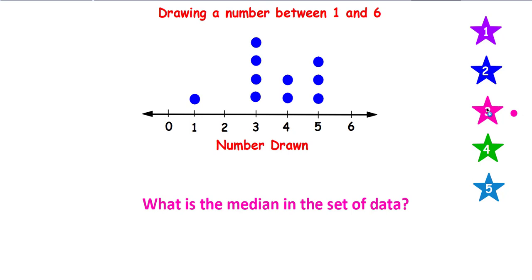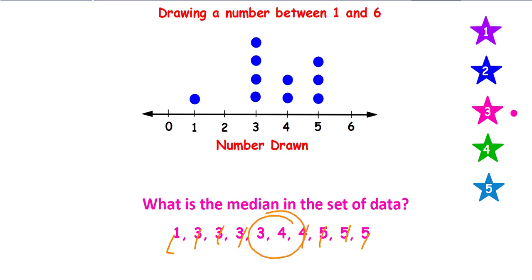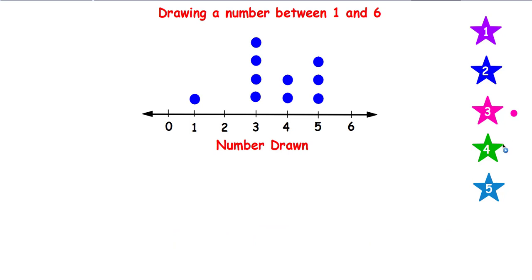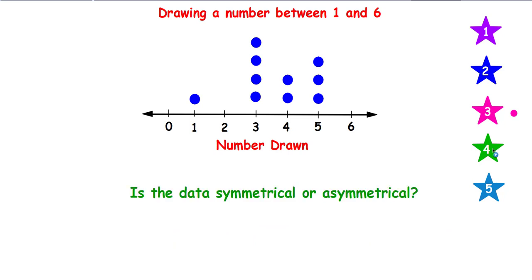What is the median in this set of data? Pause your video. The first thing you do to find the median is pull these numbers off of the line plot or dot plot, and they will be in order. Then find the one that's in the middle. There are two numbers in the middle. You can add them together and divide by 2, but they're side by side. What number is between 3 and 4? That would be 3.5 — your median. Is this data symmetrical or asymmetrical? It is asymmetrical. There's nowhere you could fold that picture and have one side fold directly on top of the other.